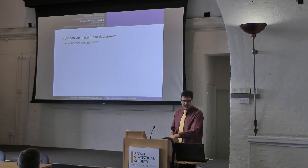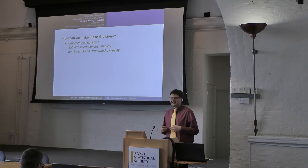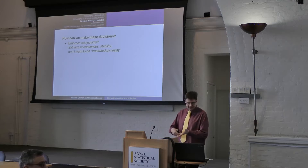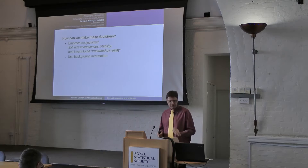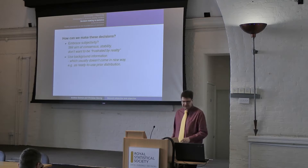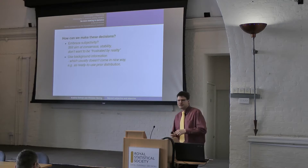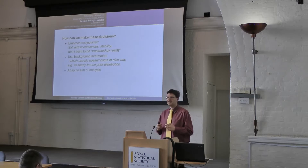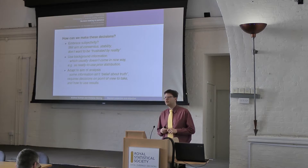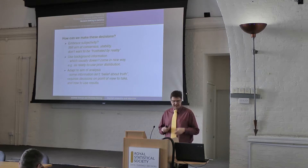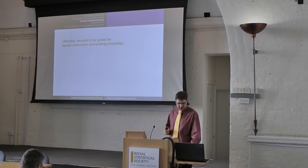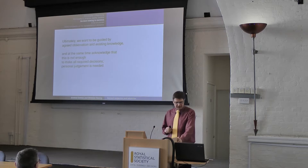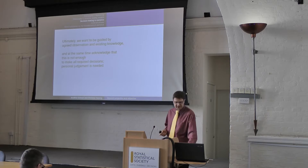We need all these decisions, and how can we make them? We can embrace subjectivity, but I come back to what we want in science: we still aim at consensus and stability and don't want to be frustrated by reality. So the subjective decisions have to be made arguing that we still fulfill this. We can use background information, but the problem is it usually doesn't come in a nice way like a ready-to-use prior distribution. We can take into account the aim of the analysis. Because some information we have really isn't of the kind 'belief about the truth' — it requires decisions on the point of view we want to take and on how to use the results. Ultimately, we want to be guided by agreed observation and existing knowledge, while acknowledging that some personal judgment is actually needed.